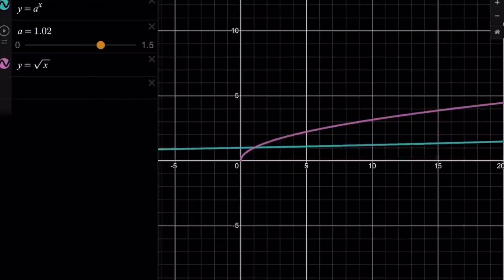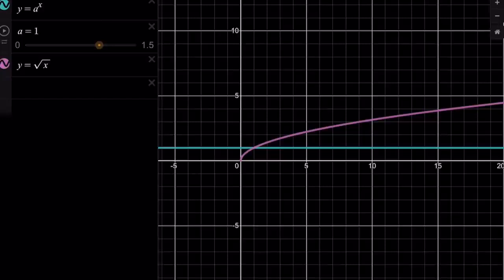Notice that as a increases towards 1, our graph is going to turn into an increasing graph. At a equals 1, it is supposed to be, I don't know if I can exactly get the 1 there, but maybe like this. You're going to get y equals 1 as your horizontal line. They're going to intersect at a point, but we're not interested in that. We're interested in the tangency.